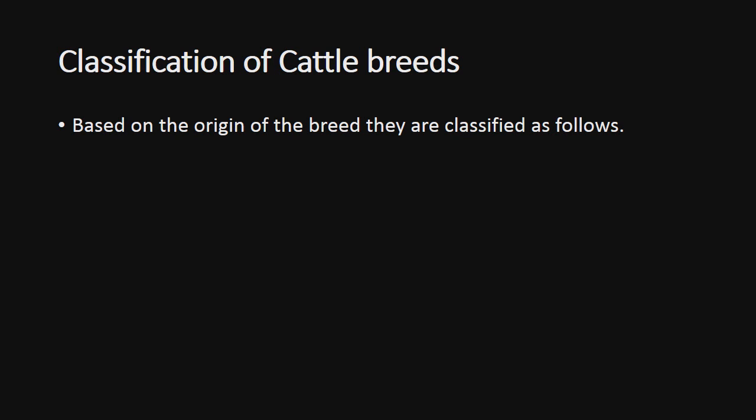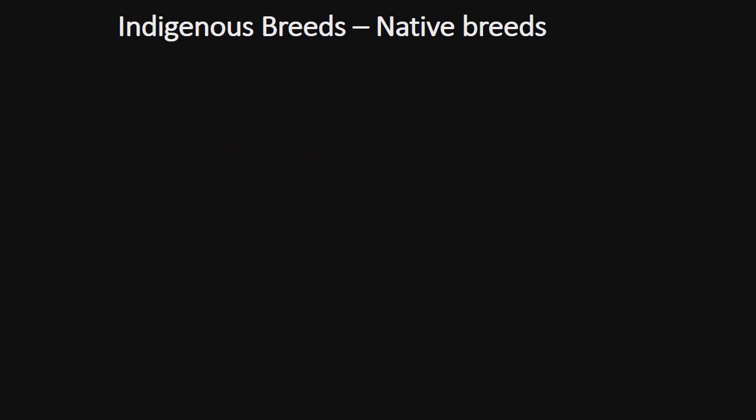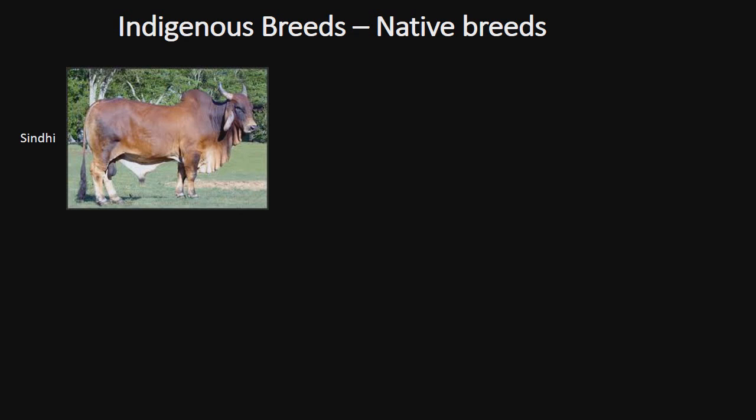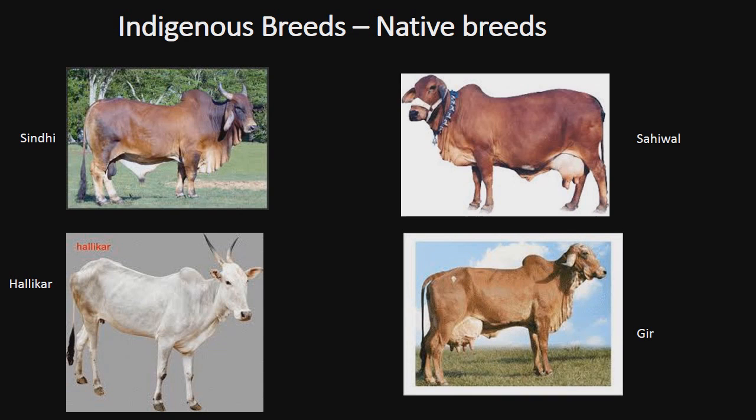Classification of cattle breeds: based on their origin, breeds are classified as indigenous breeds, exotic breeds, and cross breeds. Indigenous breeds are breeds originating from the same country — in this case India — and include breeds such as Sindhi, Halikar, Sahiwal, and Gir.